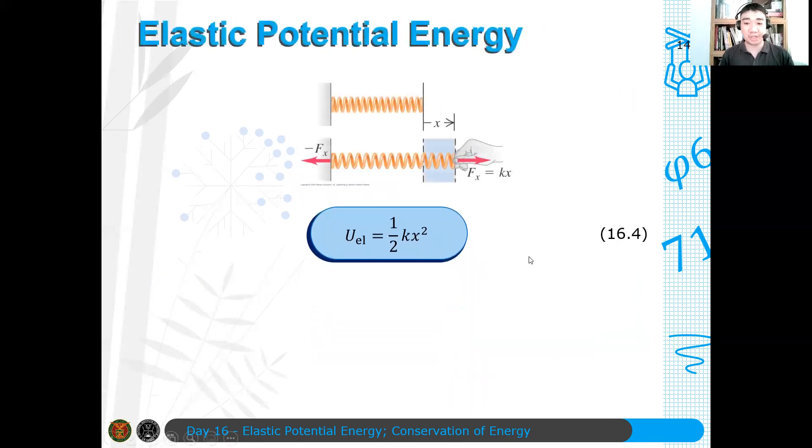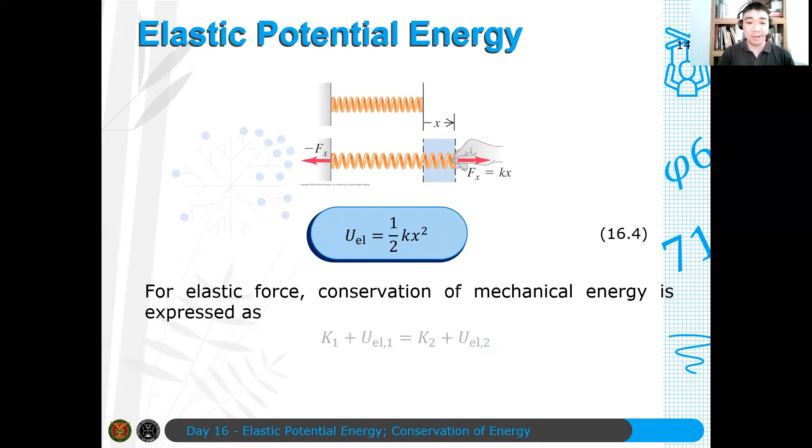In fact, ang gagamitin natin is the system here is the box and the spring. Therefore, ang kailangan natin is work done on the spring. So, equation 16.4 defines the elastic potential energy. Ang point nito, if you have this elastic potential energy, you can rewrite your conservation of mechanical energy as follows. It becomes now K1 plus Uelastic1 equals K2 plus Uelastic2. Or, you can rewrite this in more general form: 1/2 mv1² plus 1/2 kx1² equals 1/2 mv2² plus 1/2 kx2². So, ganyan yung magiging itsura ng conservation of energy natin ngayon. Now, ang assumption dito, ang tanging conservative force na makikita ay force due to spring.